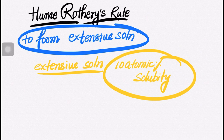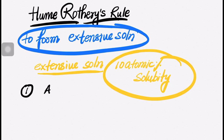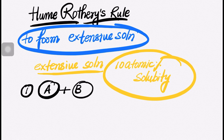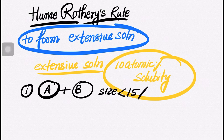This rule is basically for the formation of substitutional solid solution between two metals. The first criterion is the size difference between the atoms of the solute and parent metals should be less than 15 percent. So, size difference should be less than 15 percent — this is the first criteria.